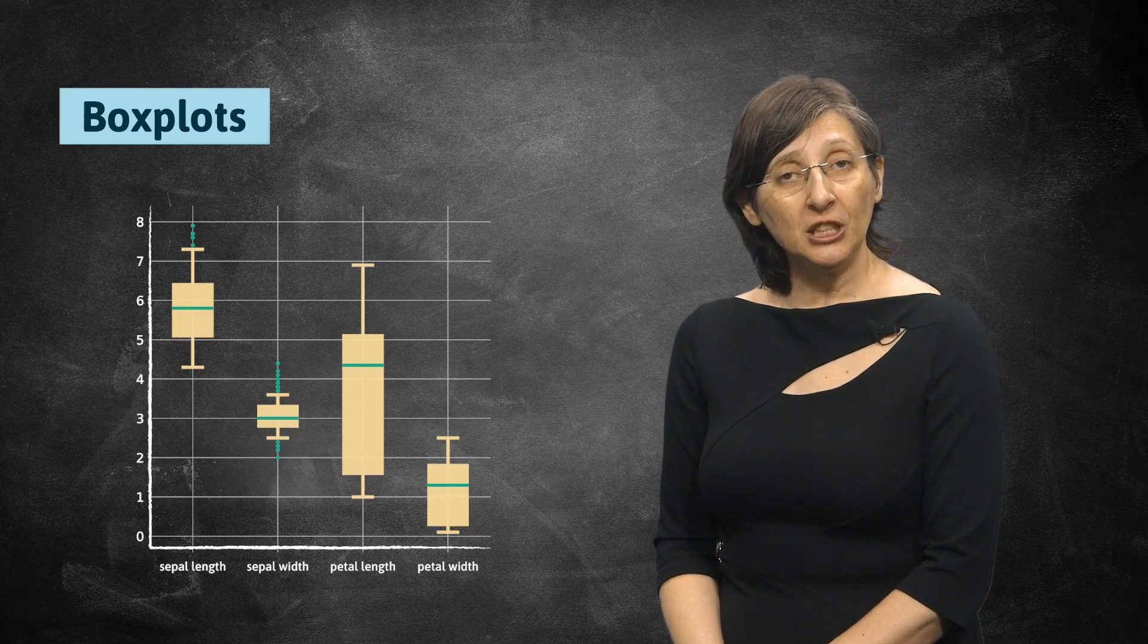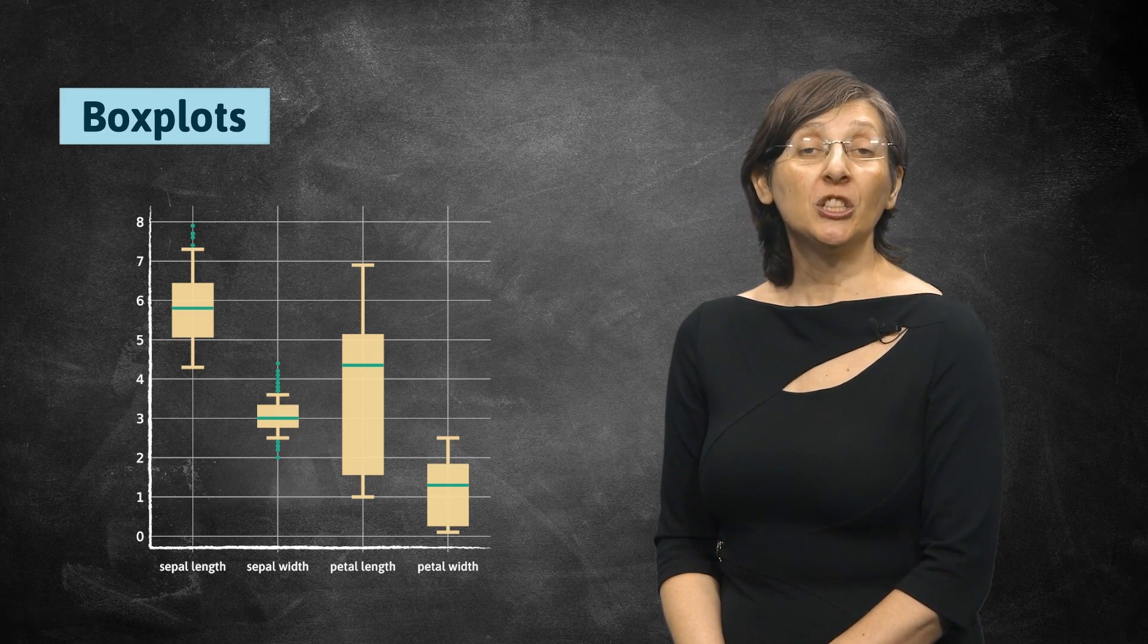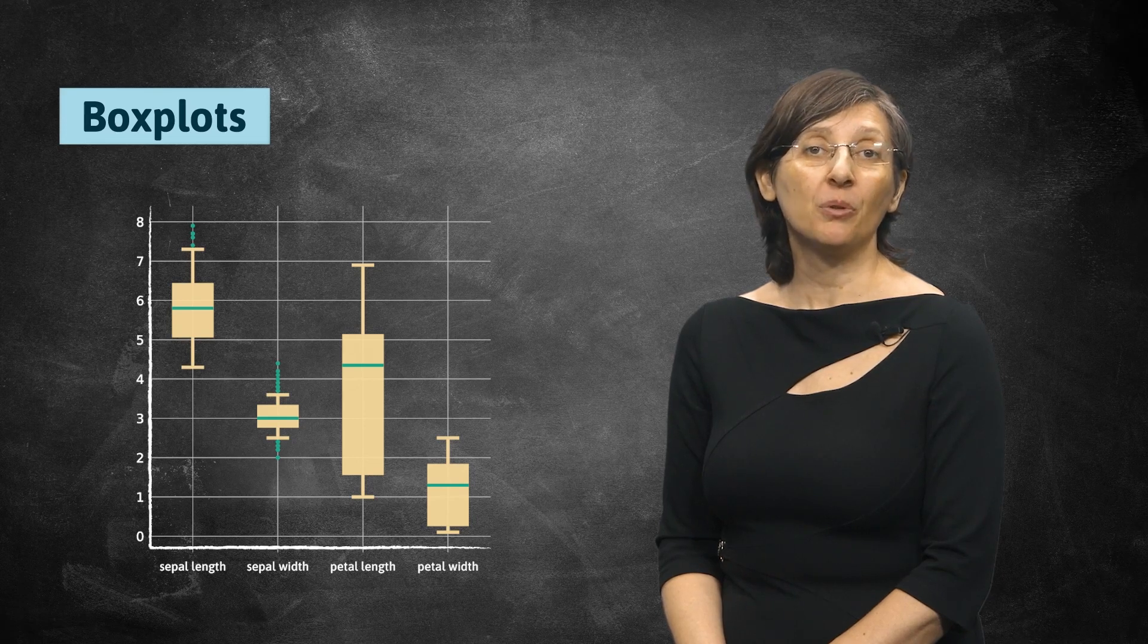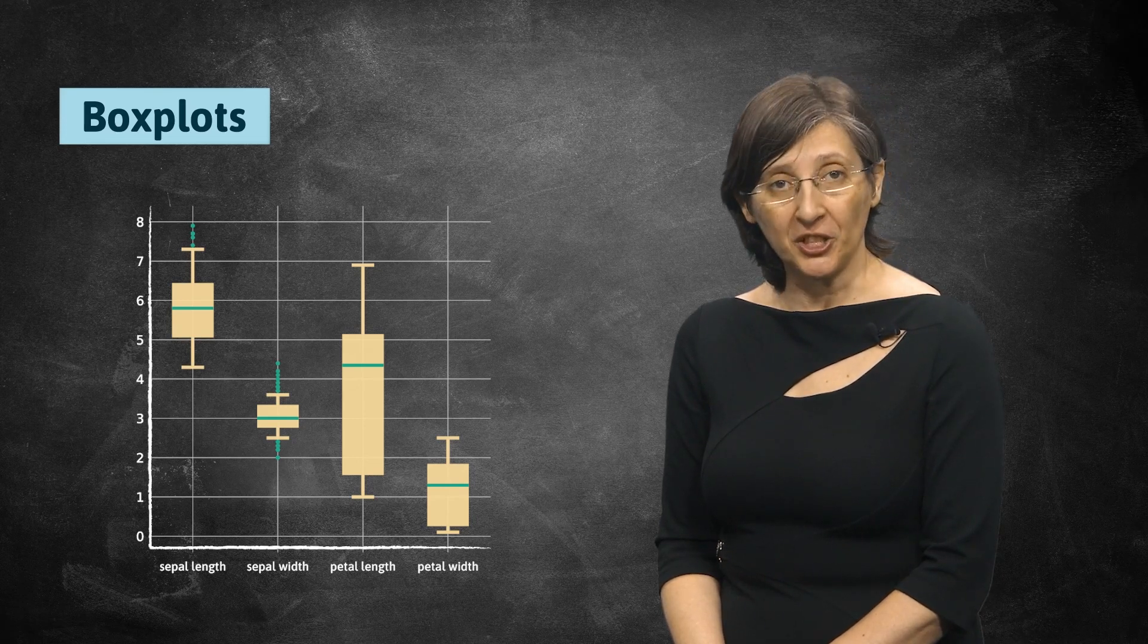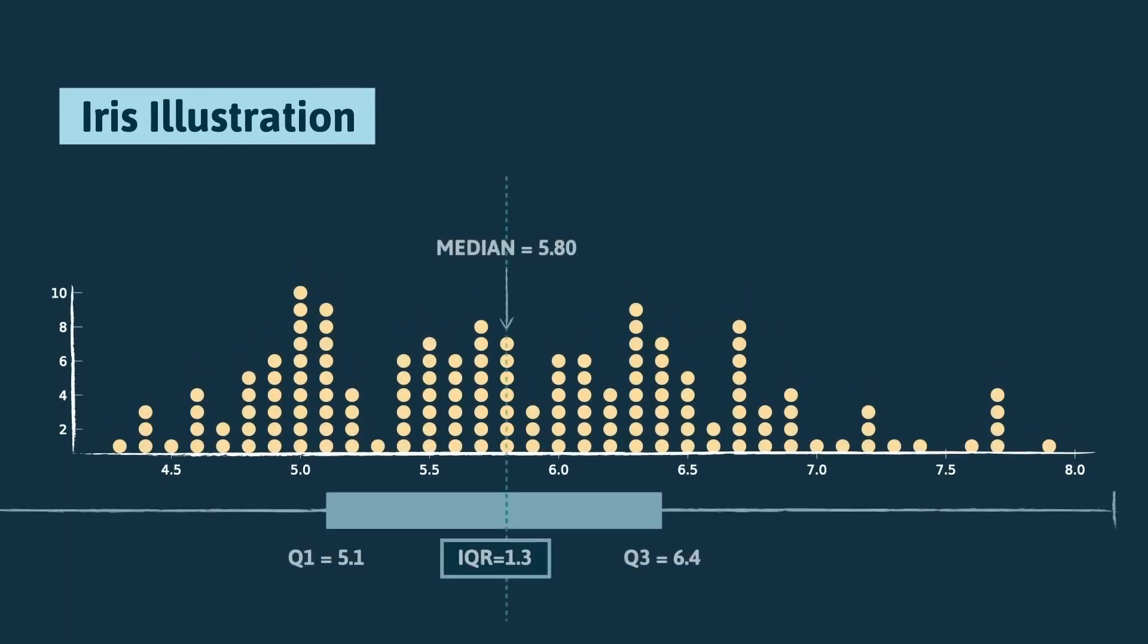It is usual to represent more than one variable in the same boxplot chart, which is useful to confront the different central tendencies of each variable in their corresponding ranges. In our illustration for the sepal length dispersion, we would have the box between the values 5.1 and 6.4, with the whisker ranging from 3.1 to 8.35, and with no outlier.